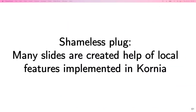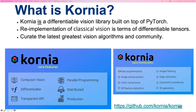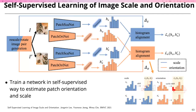All the local features I've discussed - except SuperPoint - are available in Kornia, which is OpenCV in PyTorch. You have many classical algorithms like Hessian and Harris, all differentiable so you can backpropagate through them. I use it every day in teaching and research.